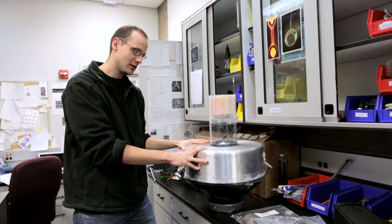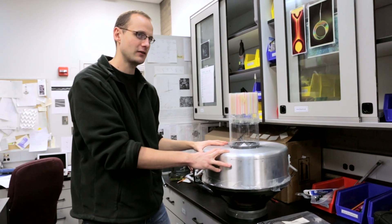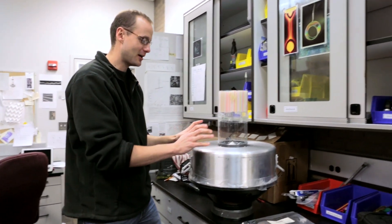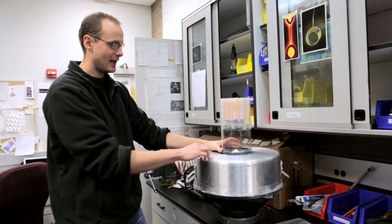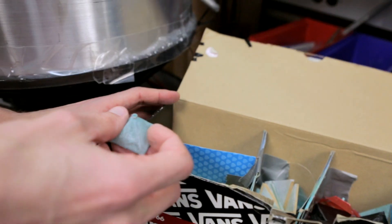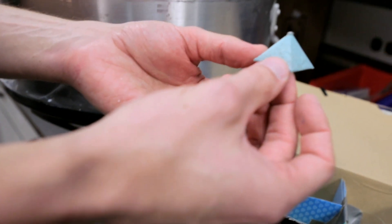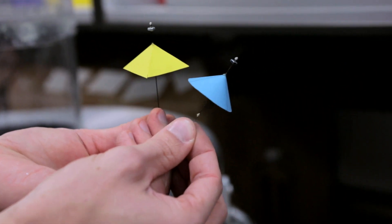This is a wind tunnel for flapping wing flight. And the idea is you put an object in there and you flap the air up and down past it. And what we do is we fly little what we call paper bugs in that up and down flow.